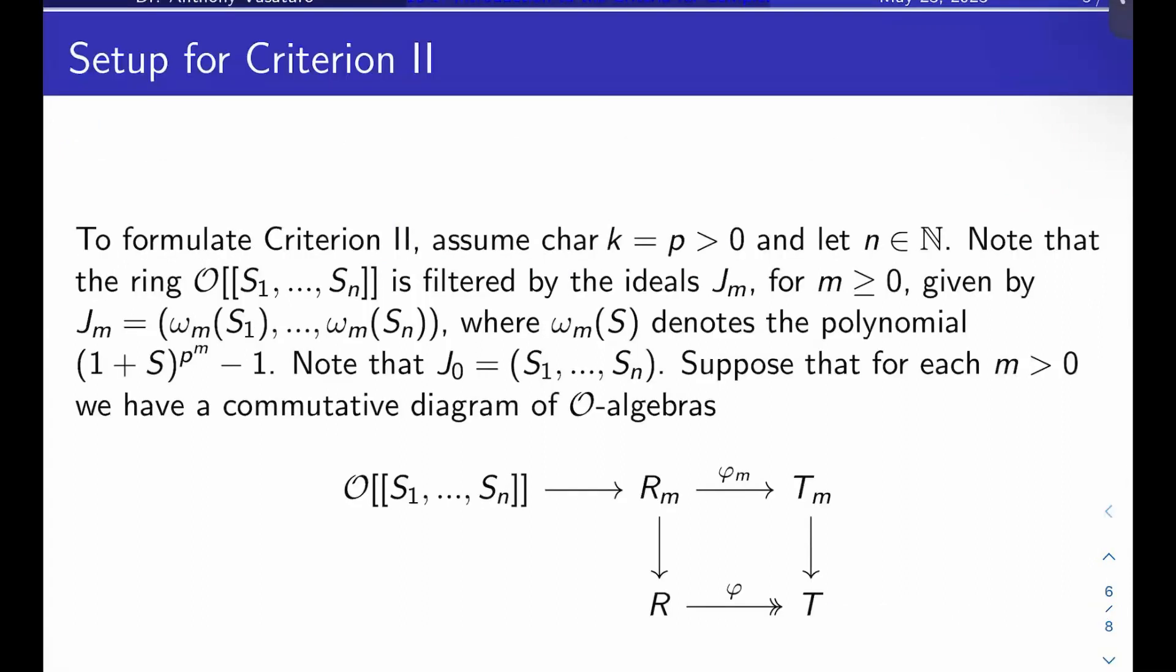So here's the setup for criterion two. We're going to assume that the characteristic of k, our residue field, is some prime p bigger than zero, and we're going to let n be a natural number. Note that the ring O double bracket S_1 through S_n is filtered by the ideals, which we'll call J_m for m greater than or equal to zero, given by the following. So J_m is ω_m of S_1 dot dot ω_m of S_n, where in general ω_m of S is the polynomial 1 plus S to the p to the m minus 1. For example, J_0 is just the ideal generated by S_1 through S_n. And you can check this filtration pretty easily because the residue field has characteristic p.